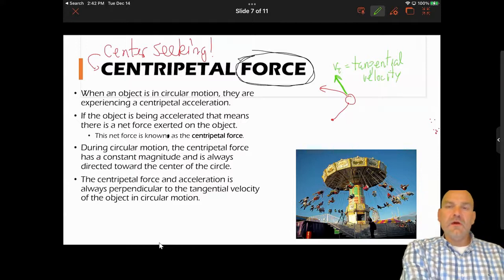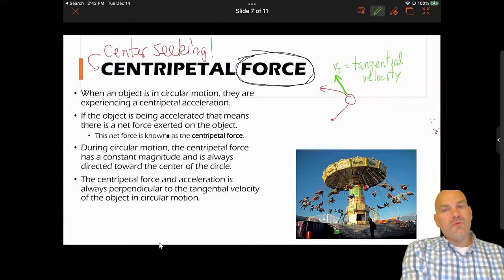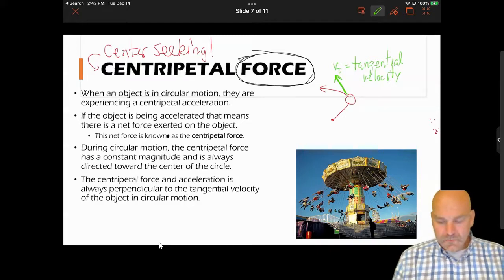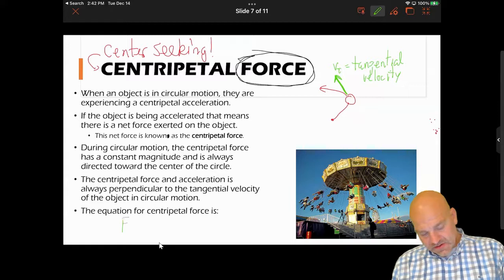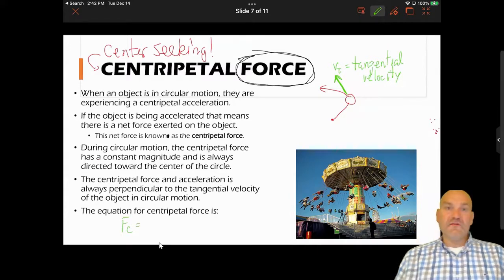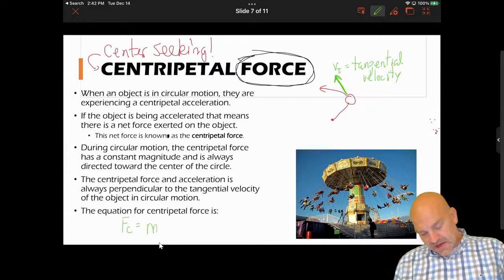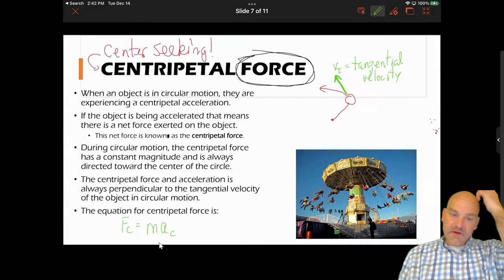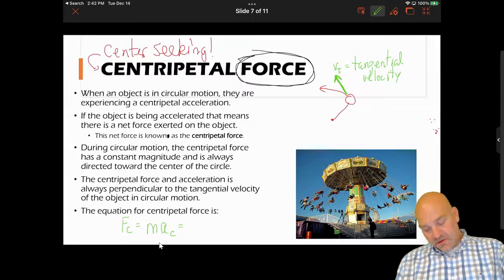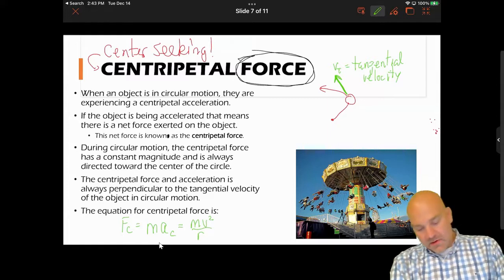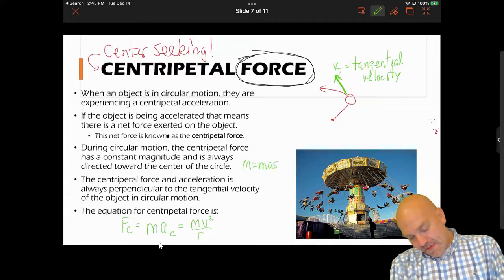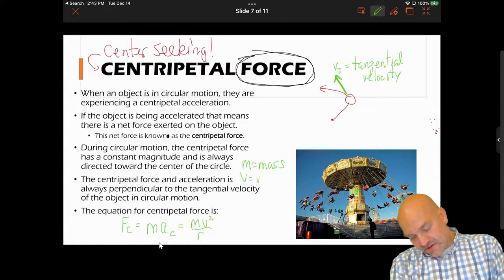When we talked about centripetal acceleration and we had v squared over r, we were looking at that tangential velocity. Now the equation for centripetal force is easy. So F sub c—how do you find force? Newton's second law says m times a. But what I'm going to do is I'm going to put in a sub c here. And so if I plug in what a_c is, you end up with m v squared over r. And remember, m is mass, v is the velocity or speed, and r is the radius of the circle.